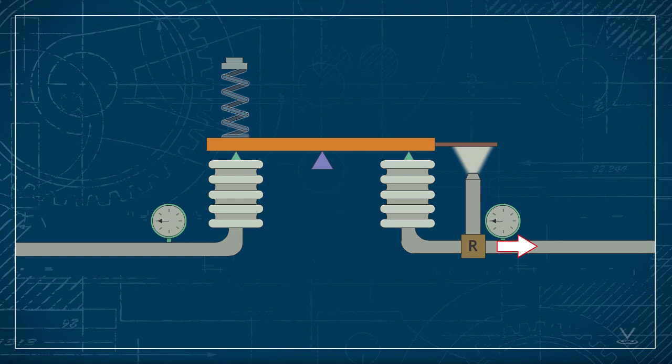The output signal is also sent to position a final control element. This is the corrective function of the controller. Right now, the controller is in balance with its output proportional to its input.